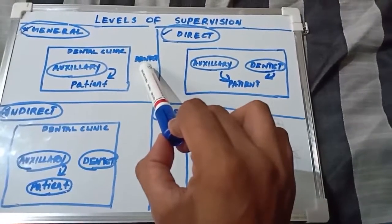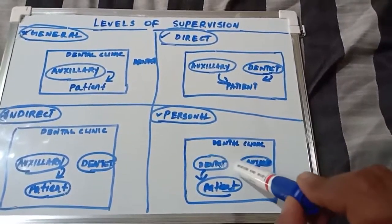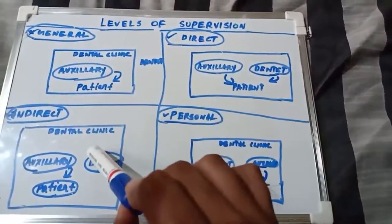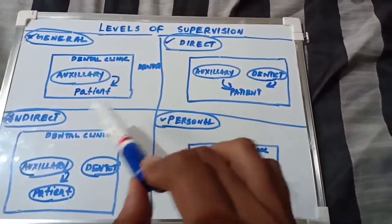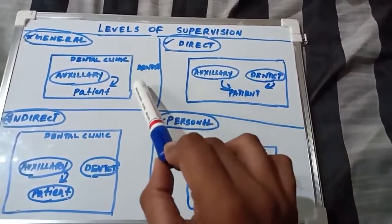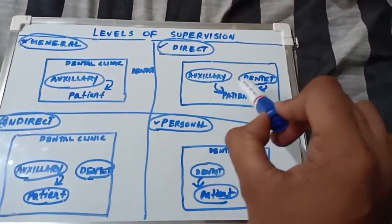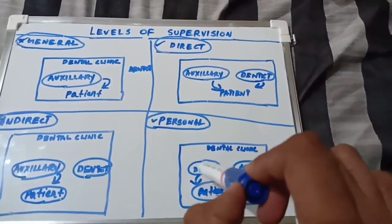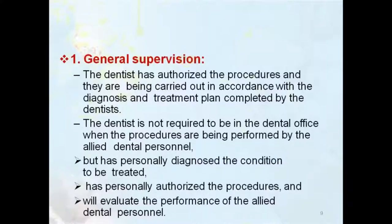In general supervision, the dentist might not be in the clinic. In personal supervision, the dentist is actually working on the patient. In the other three — general, direct, and indirect — the auxiliary is working on the patient. In all three, the dentist has given proper instructions. In general supervision, the dentist may not be in the clinic. In indirect, the dentist is present but busy with another patient. In direct, the dentist is directly monitoring. In personal supervision, the dentist is doing the work themselves.